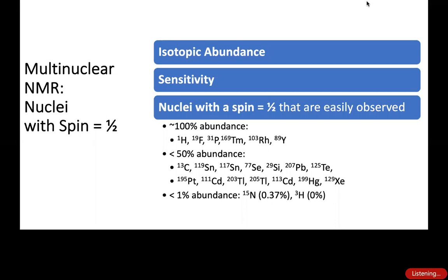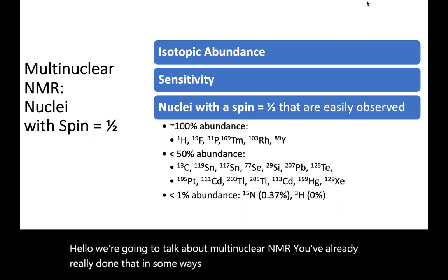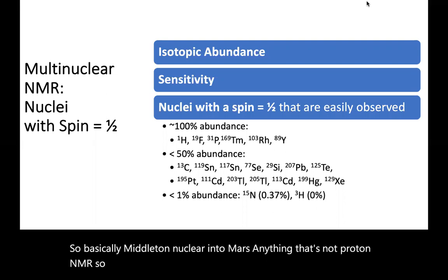Hello. We're going to talk about multinuclear NMR. You've already really done that in some ways, but we'll look at it in a little more detail. Basically, multinuclear NMR is anything that's not proton NMR. So when you've been doing carbon NMR or any other things, you've already looked at other nuclei.